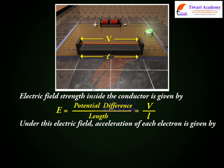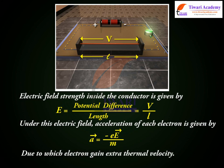Under this electric field, acceleration of each electron is given by a vector is equal to minus ee vector by m, due to which electron gain extra thermal velocity.